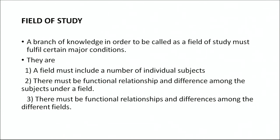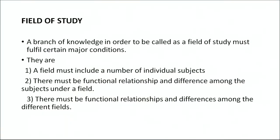First of all, a field of study must include a number of individual subjects. A single subject cannot become a field of study; a group of subjects can together form and be called a field of study. The second condition is that there must be a functional relationship and at the same time a difference among the subjects under a field. When a group of subjects are pulled together under a common heading, there should be certain relationships among those subjects, and at the same time there should be some differences as well.